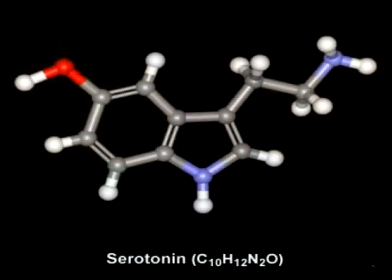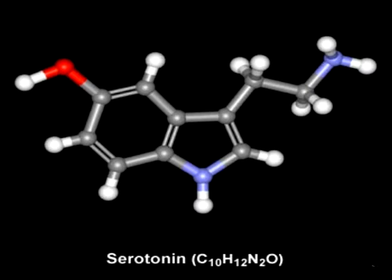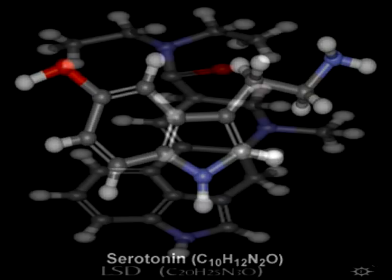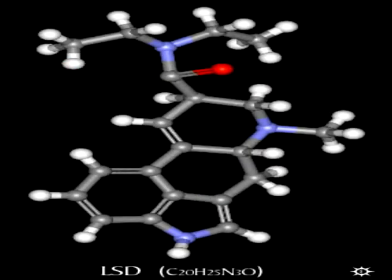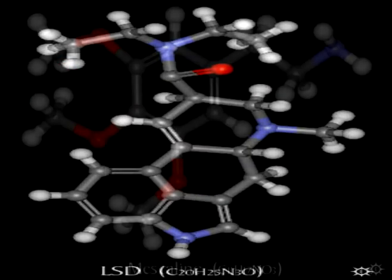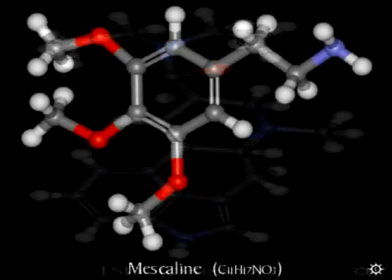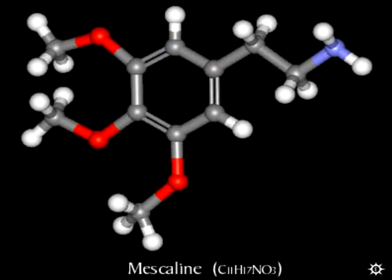Serotonin is the neurotransmitter that all these things work on, and serotonin is a tryptamine — 5-hydroxy-tryptamine. It's part of this family, and all the hallucinogens, not just DMT but psilocybin, LSD, and even mescaline, all work on serotonin receptors primarily.